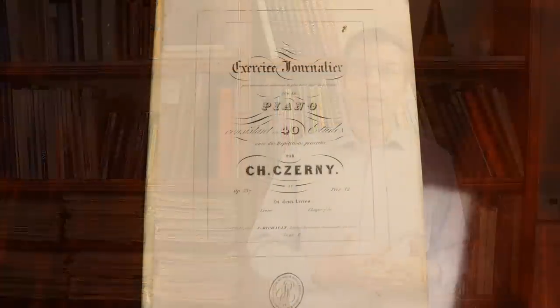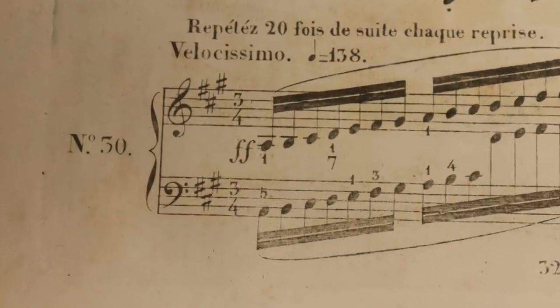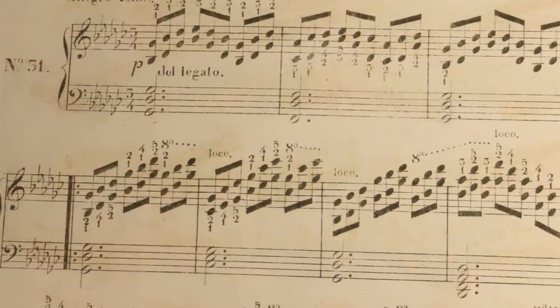But the Opus 299 is far from being the most extreme. In his famous daily exercises, Opus 337, the ones that Czerny requires you to repeat 20, 30, or even 40 times, Czerny raises the requirements for far more complex structures to over 18 notes a second, something that is not even serious anymore to be subjected to a discussion to be possible or not.